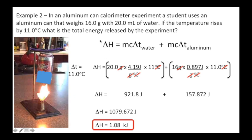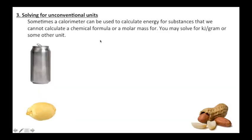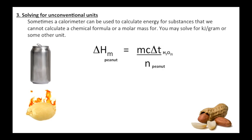Now sometimes a calorimeter can be used to calculate energy for substances that we cannot calculate a chemical formula or a molar mass for. You may solve for kilojoules per gram or some other unit. Watch this: I got a peanut, a giant massive peanut. I light it on fire and heat goes into a pop can. Heat lost by the peanut equals heat gained by the water.